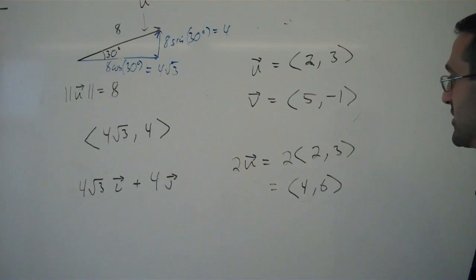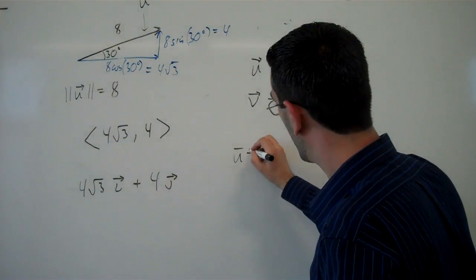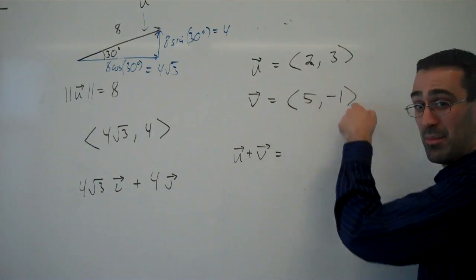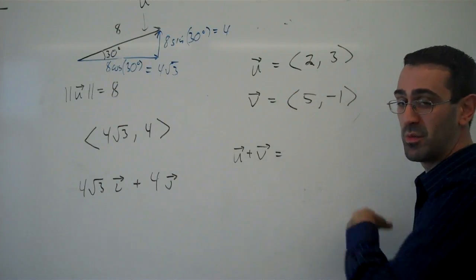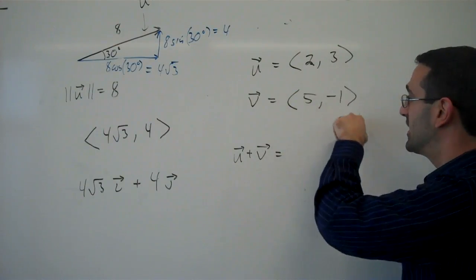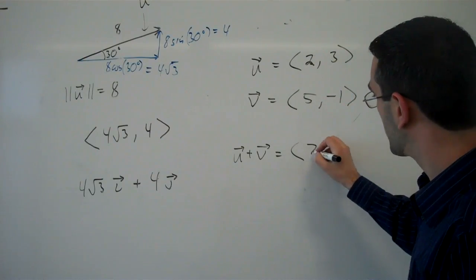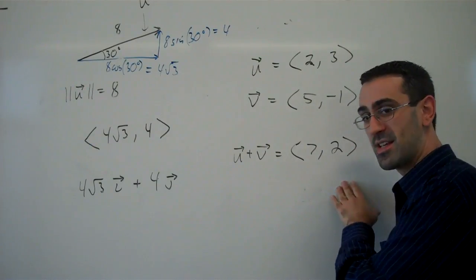If instead I wanted to add these vectors, so if I wanted to find u plus v, then I simply need to add the components. Because I'm combining the horizontal movement from u with the horizontal movement from v, and it's similar for the vertical components. So I can add the horizontal components, I can add the vertical components to find the sum of the vector.